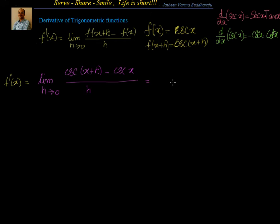Now I will write cosecant as 1 by sin. As I said earlier, converting into sin and cos is always comfortable because we have a lot of formulas to leverage. So that makes it 1 by sin x.